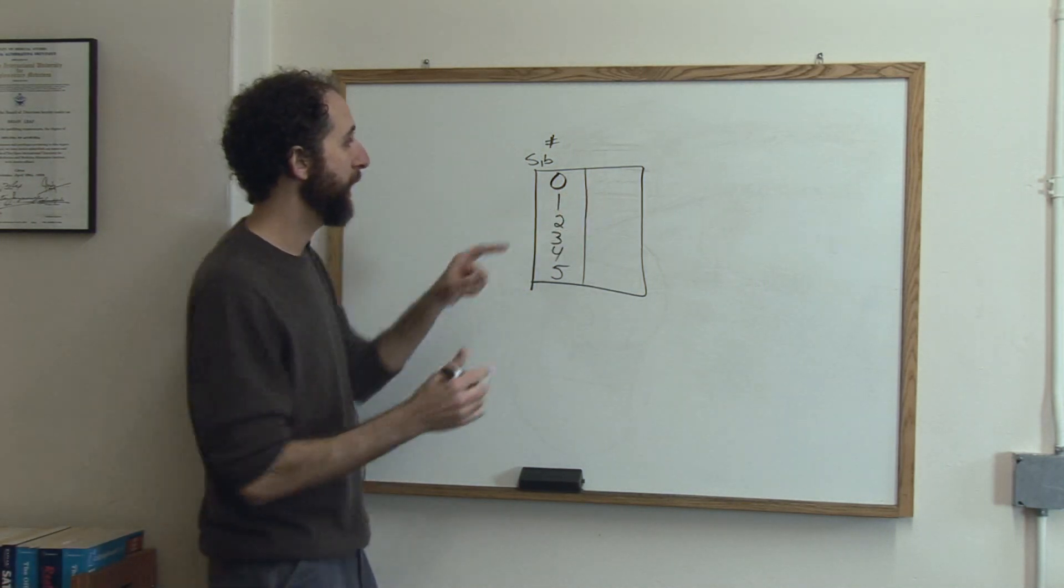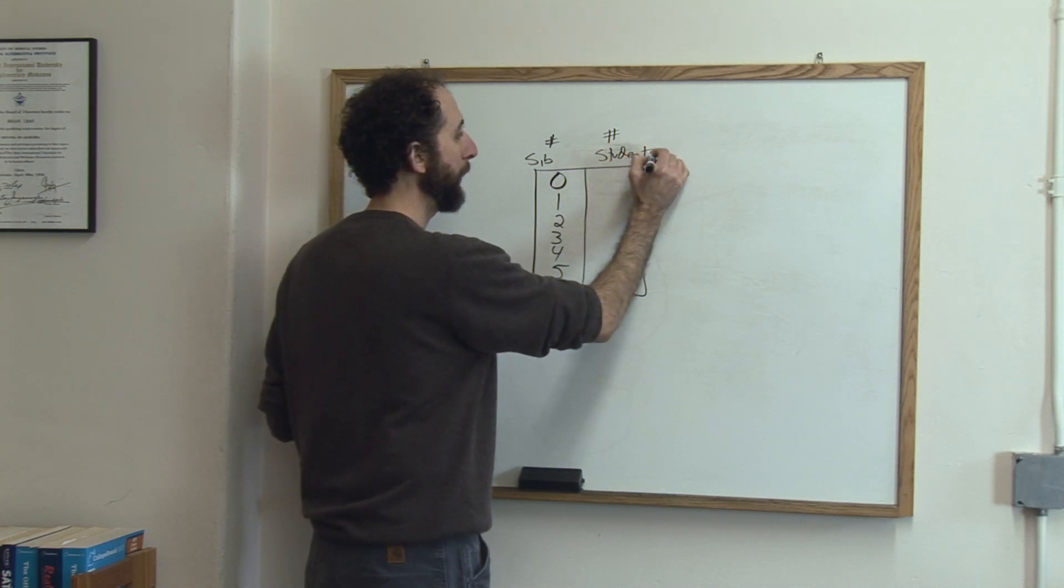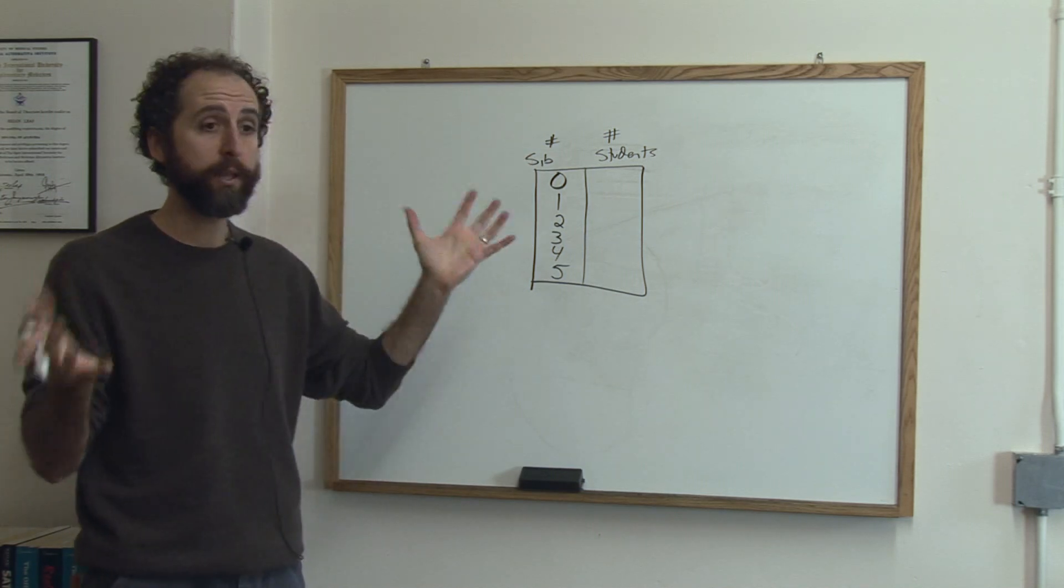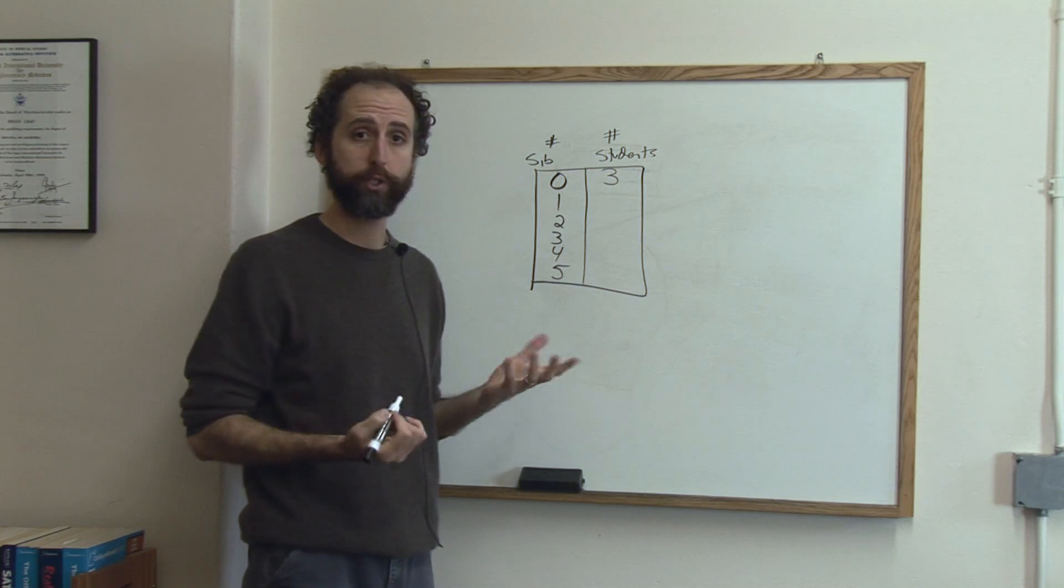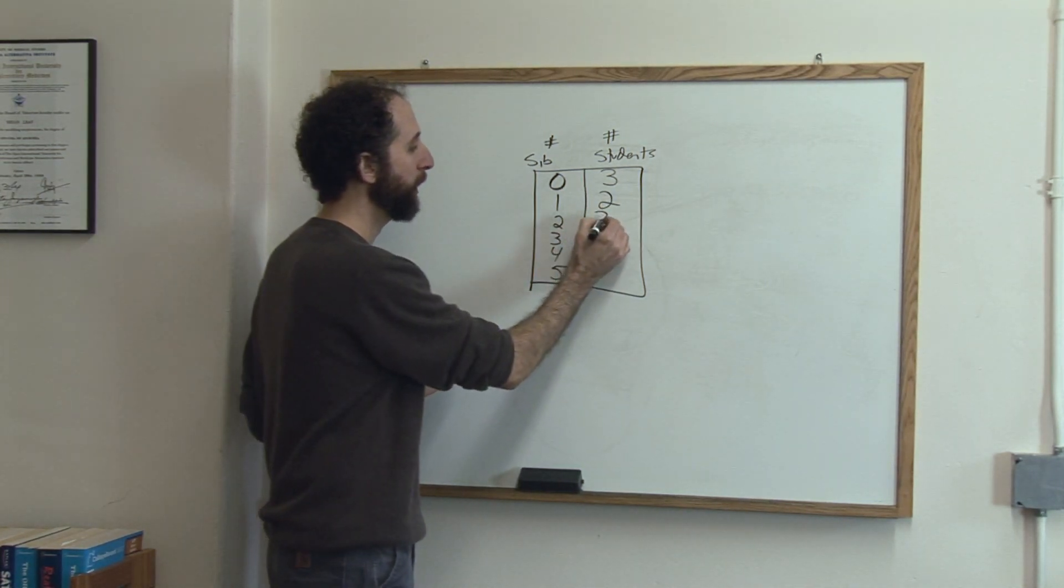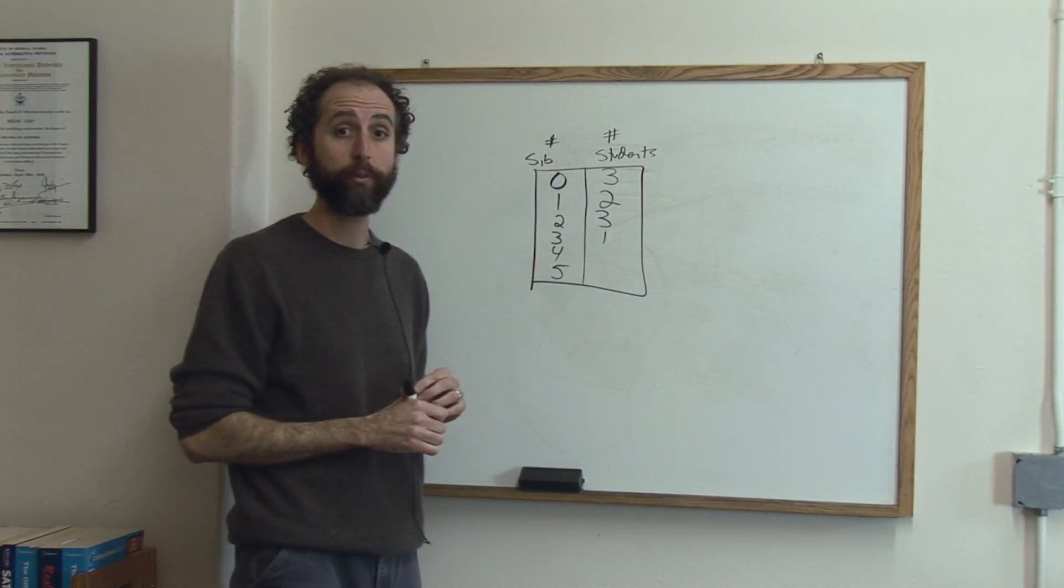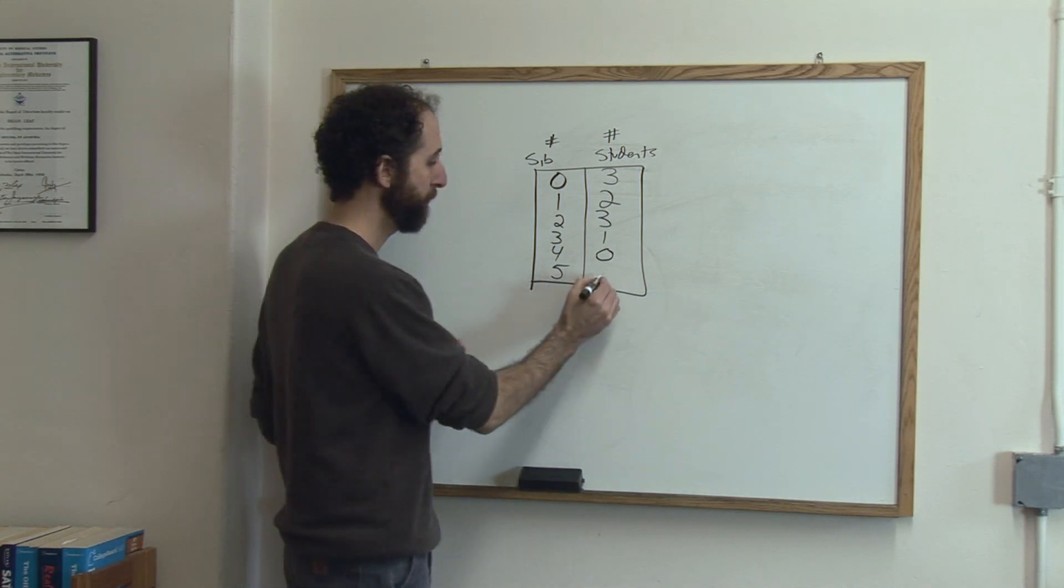So this side is going to tell us the number of students in the room who satisfy that category. Let's say in this classroom there were three kids that had no other siblings, they're only children. There were two kids that had one sibling, three kids that had two siblings, one person who had three siblings, nobody had four siblings, and one person who had five siblings.